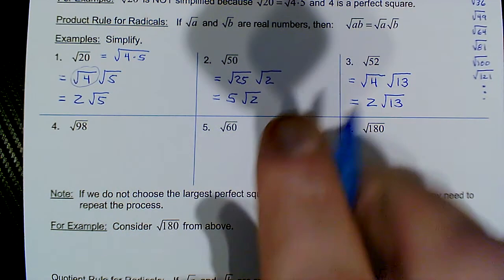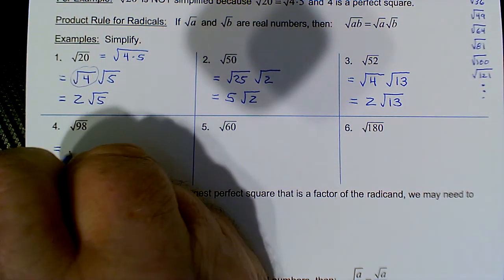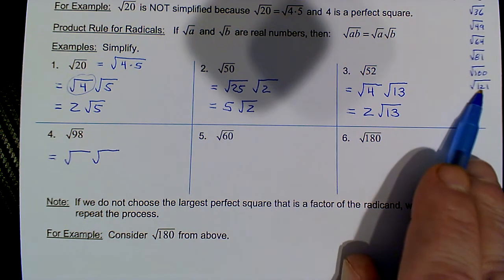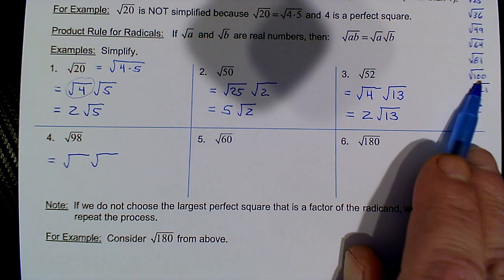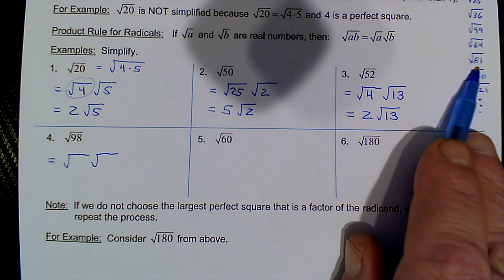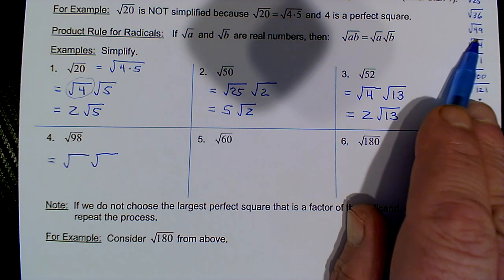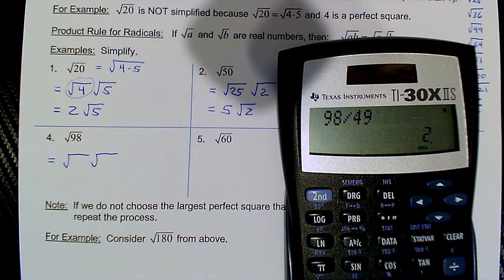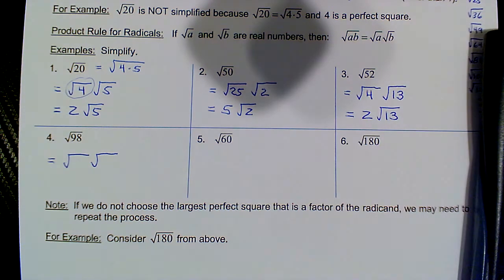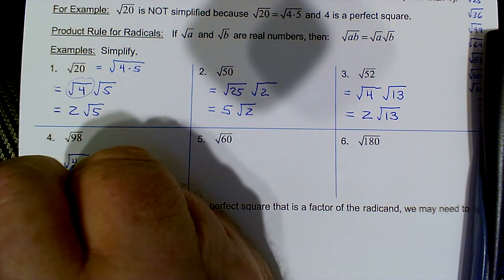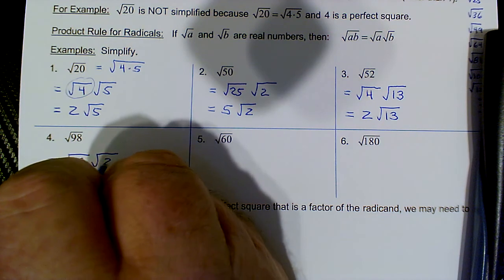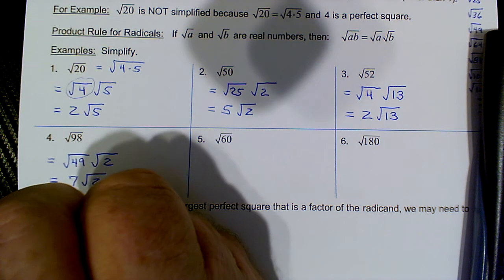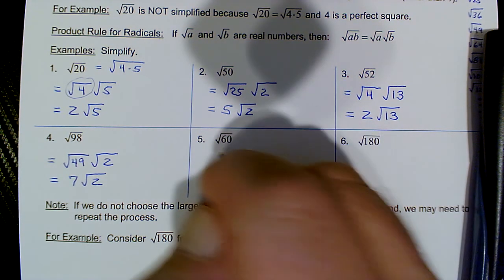For the square root of 98: try to pick the biggest perfect square factor. Does 81 divide into 98? No. Does 64? No. Does 49? Let's check: 98 divided by 49 is 2. So we use 49 and 2: put 49 under the first radical as the perfect square, 2 as the leftovers. The square root of 49 is 7, and the square root of 2 tags along.